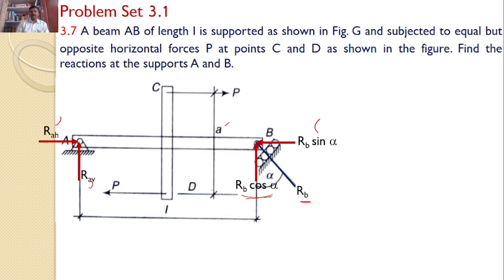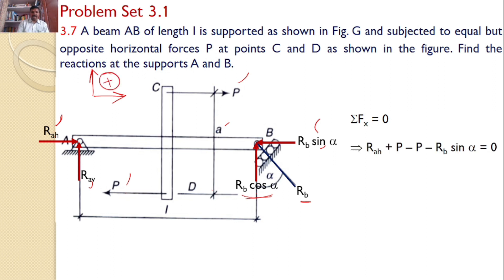To satisfy equilibrium, consider the first equilibrium equation: sigma Fx = 0. There are four forces acting along the x-axis: RAH, P, the opposing P, and RB sin alpha. Taking the rightward direction as positive x, we write: RAH + P − P − RB sin alpha = 0, which gives RAH = RB sin alpha. This is equation number 1.